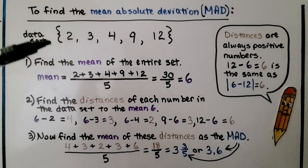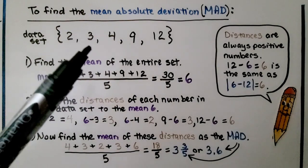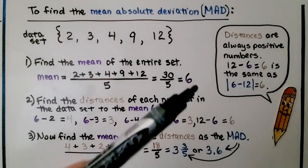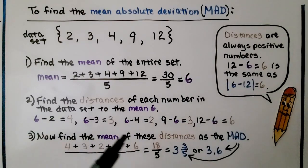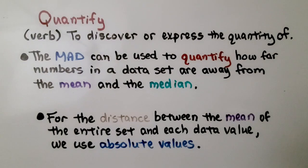So to summarize: we found the mean of the entire set, then the differences — the distances — between each number and the mean of the entire set, then we found the mean of those distances, and that was our MAD. The MAD can be used to quantify how far numbers in a data set are away from the mean and the median. For the distance between the mean of the entire set and each data value, we use absolute values, because distances are always positive numbers.